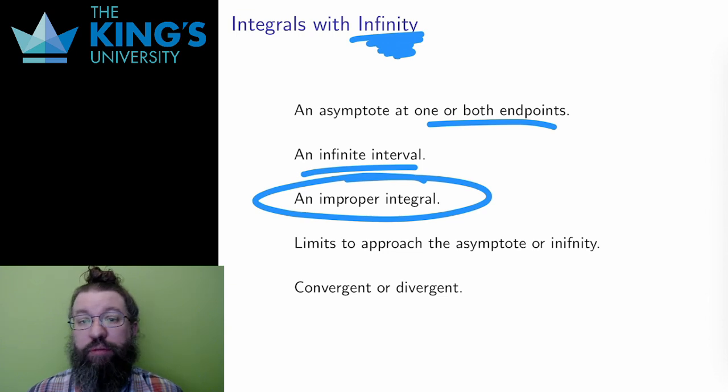Improper is perhaps a bit unfair, but they are unusual because to try and calculate them directly would involve using infinity in the calculations. Arithmetic with infinity is indeed improper, so some other technique is needed.